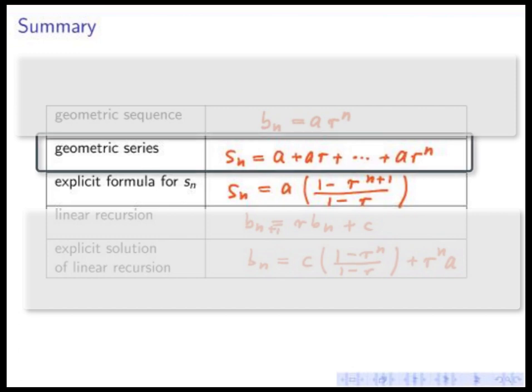It is a sum a plus ar plus and so on plus ar to the n. And the explicit solution is given right here. This rather complicated looking formula: a times 1 minus r to the n plus 1 divided by 1 minus r. So how do we get that?